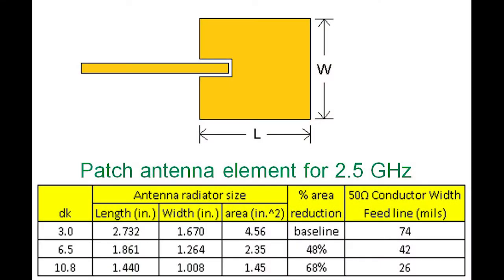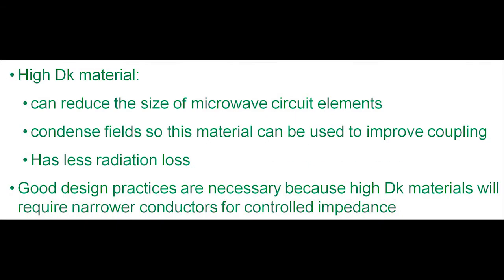Shown here is a top view of a microstrip patch radiating element designed to operate at 2.5 GHz, along with a table showing the different sizes of this radiating element using different Dk materials. The left column shows dielectric constants of 3, 6.5, and 10.8; the fourth column shows the area, which changes significantly from low- to high-Dk materials. The far right column shows the 50-ohm conductor width for a feed line — a reference that illustrates the significant narrowing of conductors as Dk increases, meaning less energy reaching the radiating element.